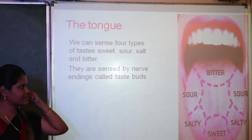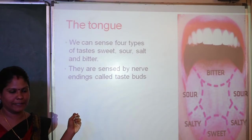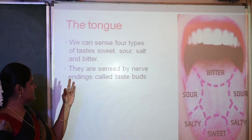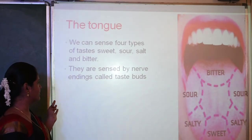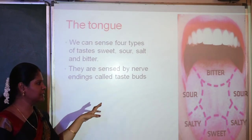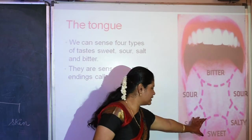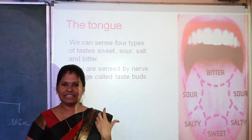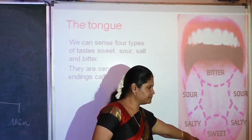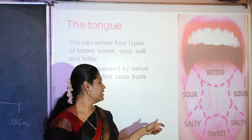The next sense organ is the tongue. The tongue is used to eat and taste food. There are four types of taste: sweet, salty, bitter, and sour. The tip of the tongue helps us feel sweetness. The sides of the tongue help us feel saltiness. The upper part slightly further back helps us feel sourness, and the last part of the tongue helps us feel bitterness.